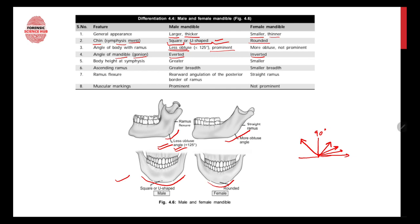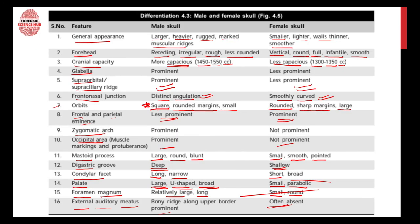The body height of the symphysis is greater in the male mandible and less in the female mandible. The ascending ramus has greater depth in males and smaller depth in females. The ramus shows rearward angulation of the posterior border in males, whereas it is straight in females. Muscular markings are prominent in the male mandible and not so prominent in the female mandible.